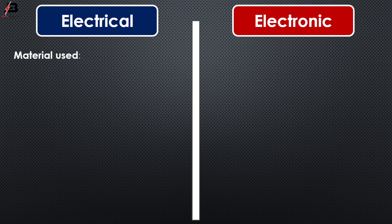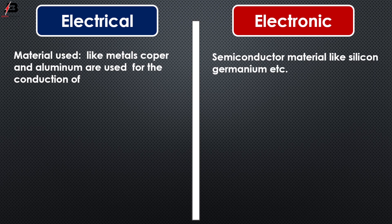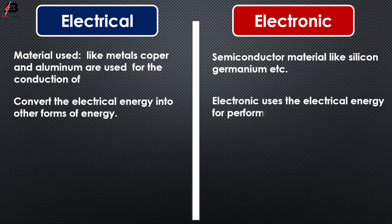Regarding materials used: metals like copper and aluminum are used for the conduction of electrical. Semiconductor materials like silicon, germanium, etc. convert the electrical energy into other forms of energy. Electronics use the electrical energy for performing a particular task.